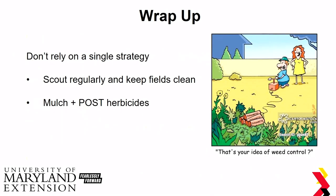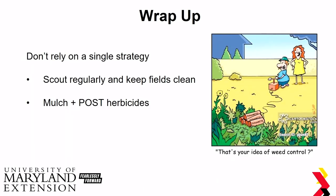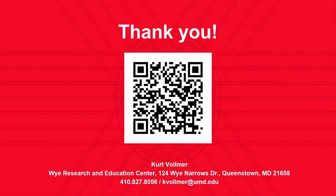To wrap things up: don't rely on just a single strategy. It's very important to scout your fields regularly and know what kind of species you have. If you can, try to incorporate some integrated tactics — like using mulch to help keep the weeds down early in the season, and then coming back with those post-emergence herbicides.